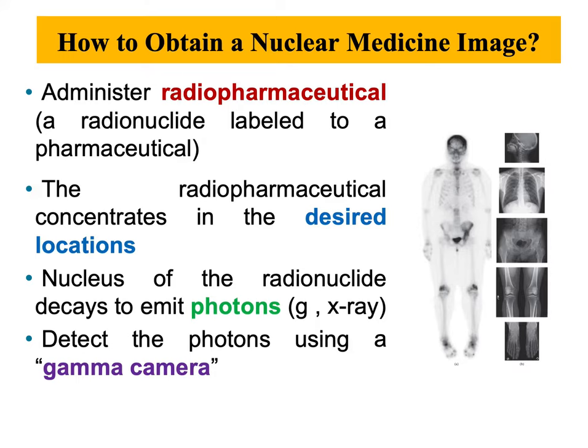So in general, how do we obtain a nuclear medicine image? First of all, we administer the radiopharmaceutical agent that is connected to a radioactive atom. We administer this material inside the body, then the radiopharmaceutical material concentrates in the desired location. You can see in the image to the right that in the bladder area, there is a dark region where the radiopharmaceutical is concentrated, being deposited out of the body through the bladder.